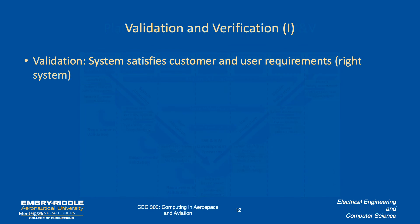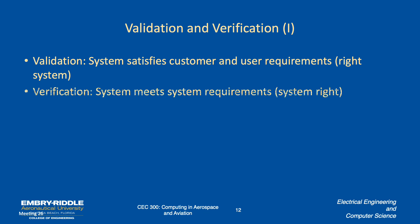Validation ensures the system satisfies customer and user requirements — are we making the right system? Verification asks whether the system meets its own requirements — are we doing it right, is it meeting the specs? Both validation and verification occur over the entire lifecycle of development.